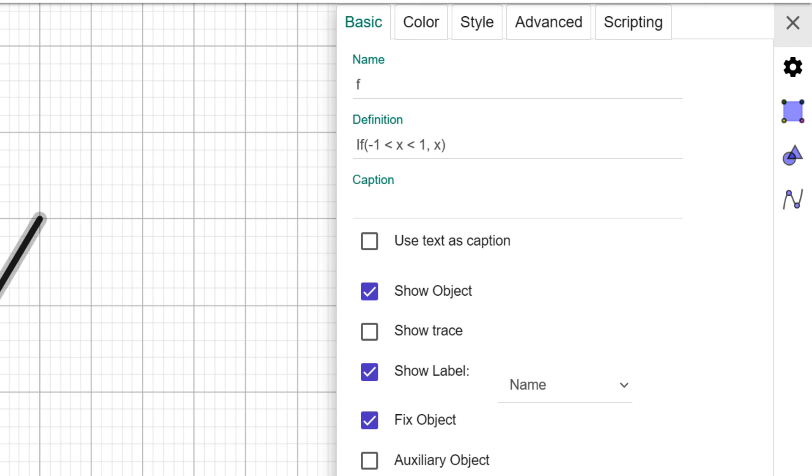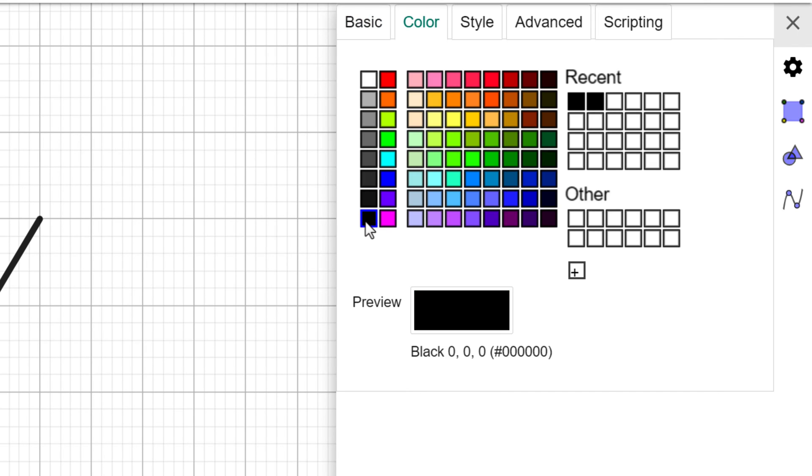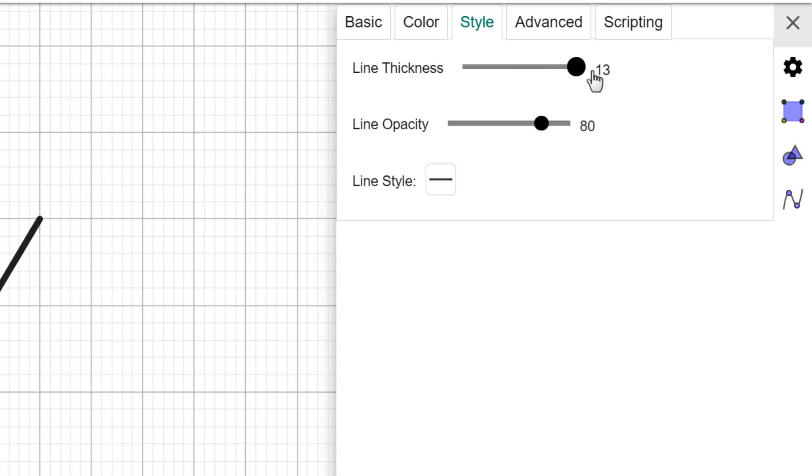I am going to also remove my label, so I am going to turn off the show label so that your label is gone. I am going to repeat the same thing for other curves. Uncheck show label and change color to black and style to increase line thickness. Repeat the process for the last one.